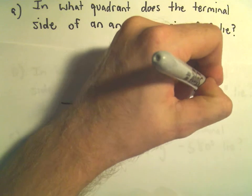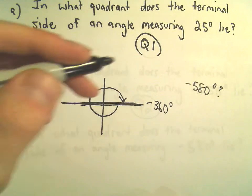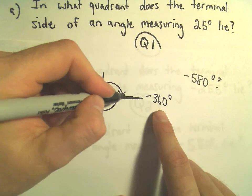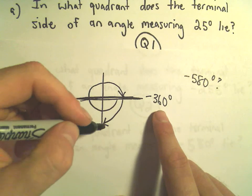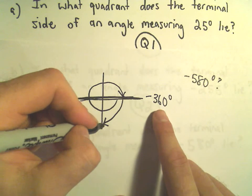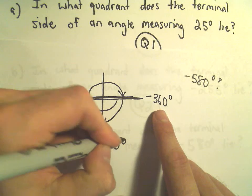We're doing negative 580 here. So there's negative 360. If we go to the bottom, we'll go another negative 90. So that'll give us negative 450 degrees.